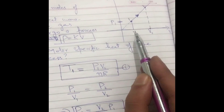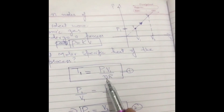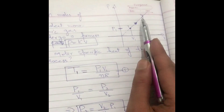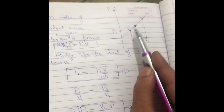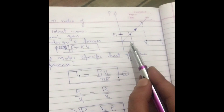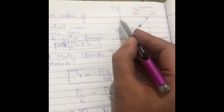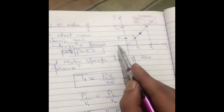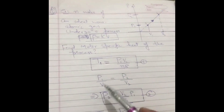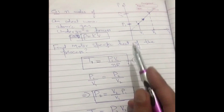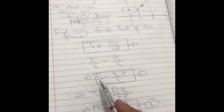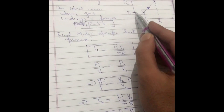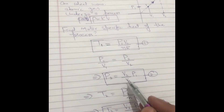Temperature at point 1 is equal to p1 multiplied by v1 divided by nR. At point 2, the pressure is not given, but I can calculate it because it is a straight line — the slope is always constant. The slope at point 1 is p1 by v1 and at point 2 it is p2 by v2. Since the slope is constant: p1/v1 = p2/v2, therefore p2 = (v2/v1) × p1.